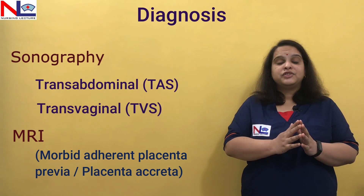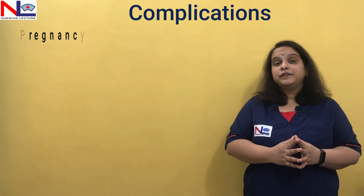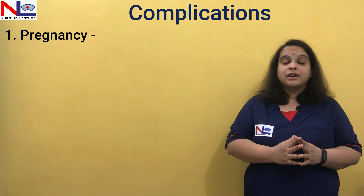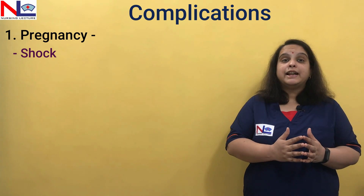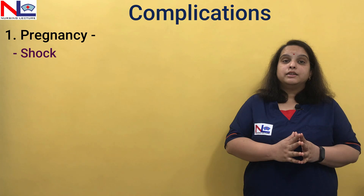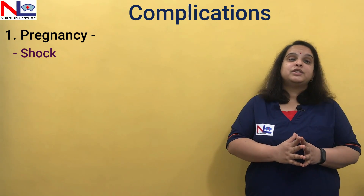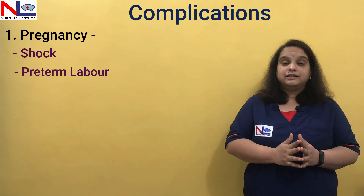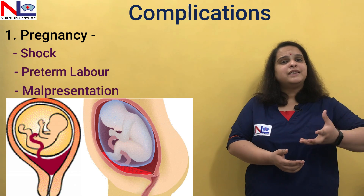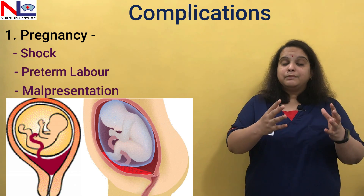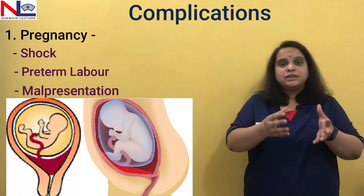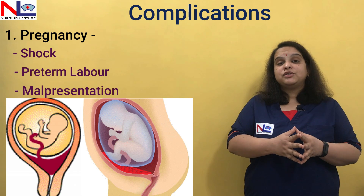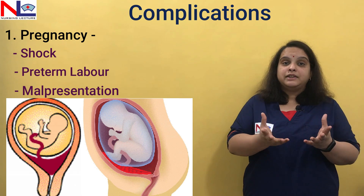The rest of the investigations are generally needed to manage the woman. Now let's talk about complications. During pregnancy, if bleeding is too brisk, there may be hemodynamic imbalance leading to shock due to hypovolemia. With too brisk hemorrhage, there may be preterm labor, and various malpresentations could occur because the placenta is low-lying — the presenting part cannot engage and may not have enough space to descend, leading to breech presentation or transverse lie.